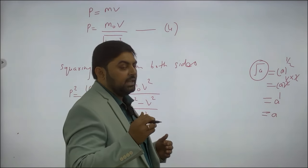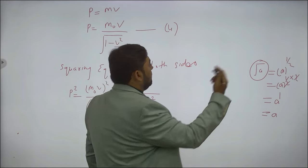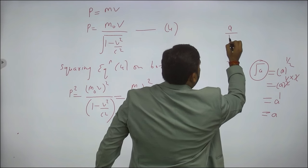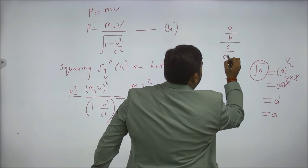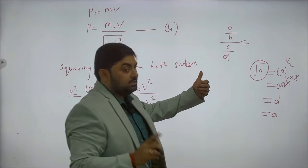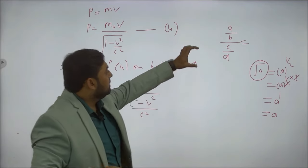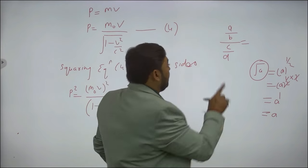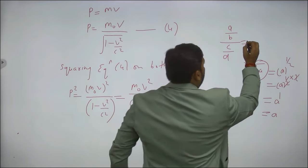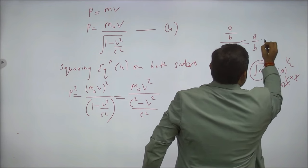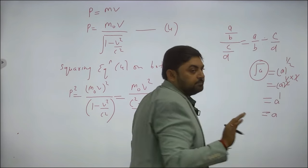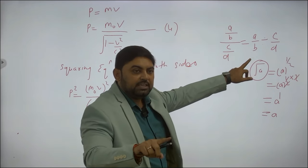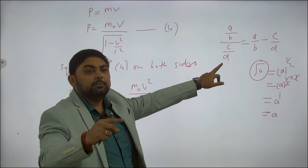If you remember the rule of fractions: for a complex fraction such as (a/b) divided by (c/d), we can convert the division into multiplication and reciprocate the second term. Similarly, for a fraction where the numerator is a whole number and the denominator is a fraction — a divided by (b/c) — this equals a multiplied by (c/b), because both numerator and denominator are complex.